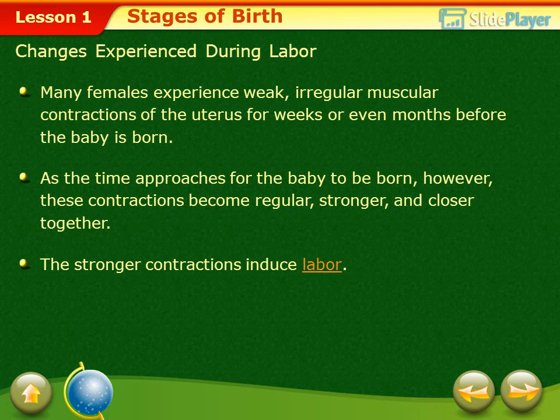Stages of birth — changes experienced during labor: Many females experience weak, irregular muscular contractions of the uterus for weeks or even months before the baby is born. As the time approaches for the baby to be born, these contractions become regular, stronger, and closer together. The stronger contractions induce labor.